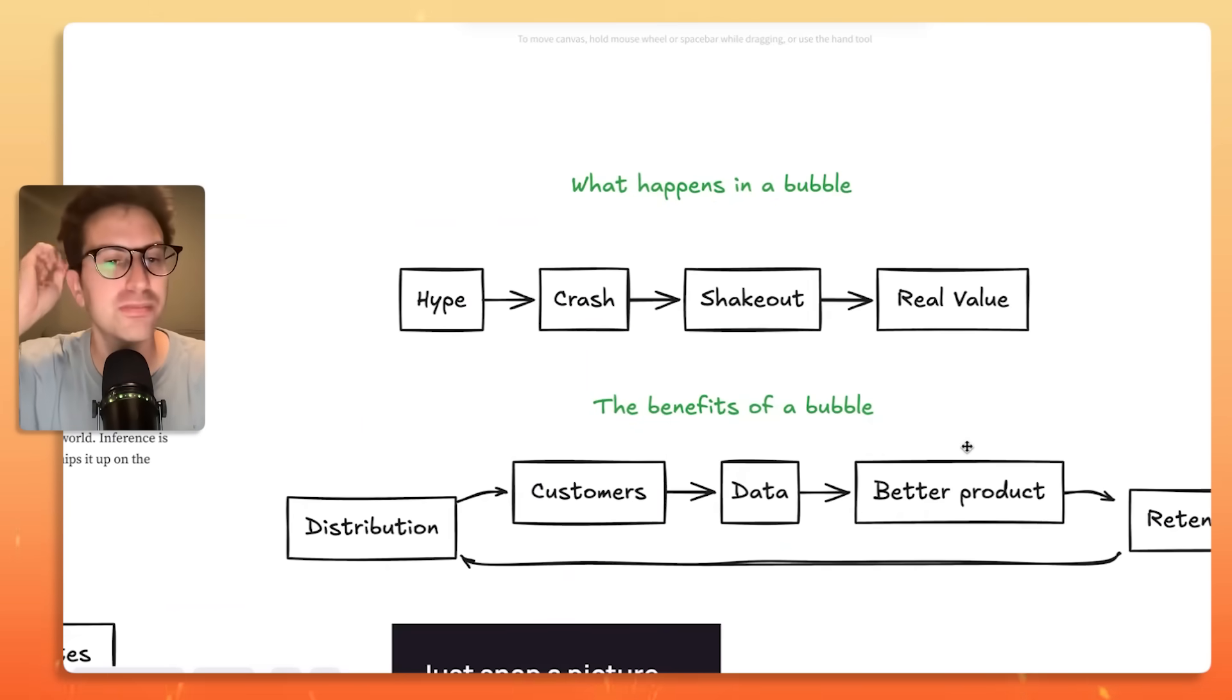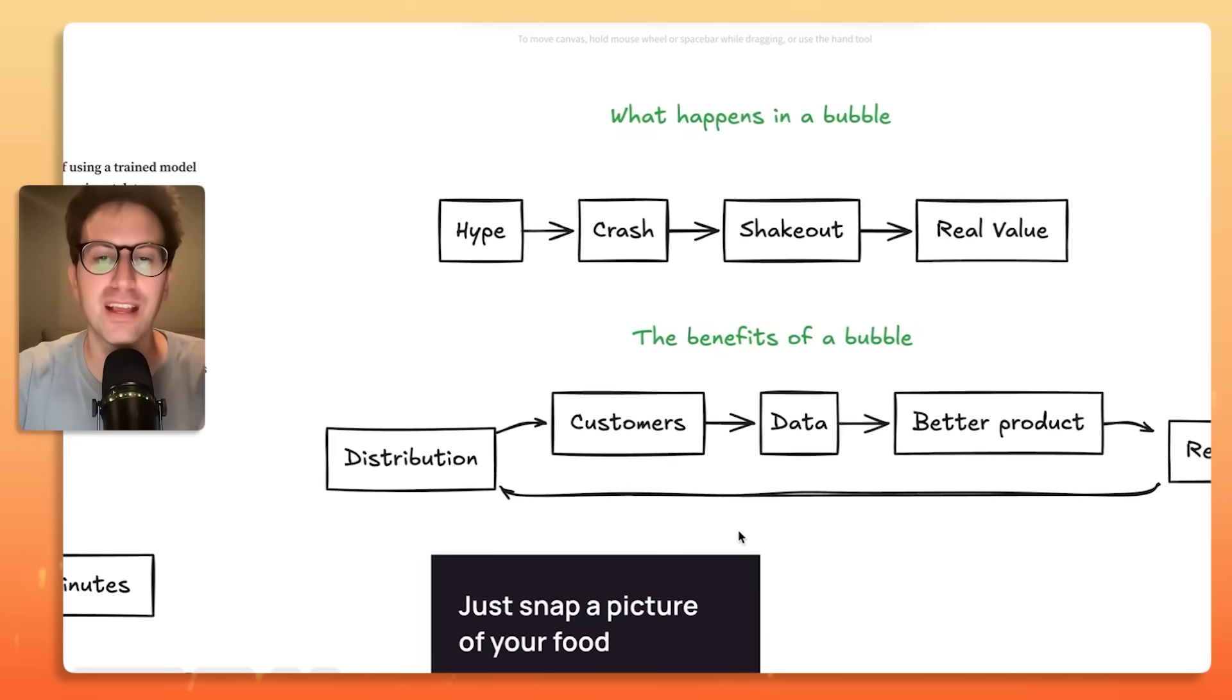And there are benefits to a bubble. When there is a bubble, there's also a lot of interest. There's just a lot of consumer interest. So, distribution tends to be easier during a bubble. People hear about, let's just say, if it is an AI bubble, people hear about AI, hear about it, and they're interested in it. So, distribution becomes easier, easier to get customers. That gives you data, that allows you to create a better product, which helps with retention and creates this flywheel.